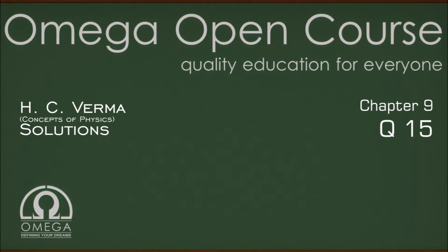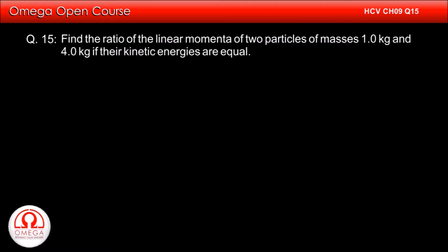H.C. Verma Chapter 9 Question No. 15: Find the ratio of the linear momenta of two particles of masses 1 kg and 4 kg if their kinetic energies are equal.